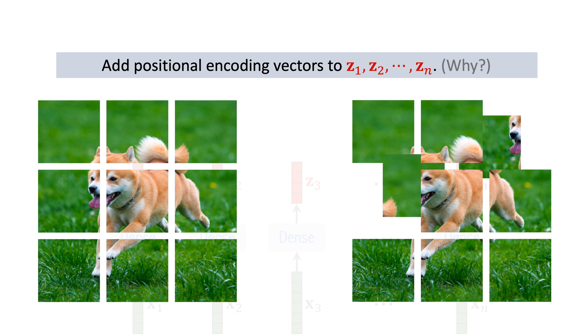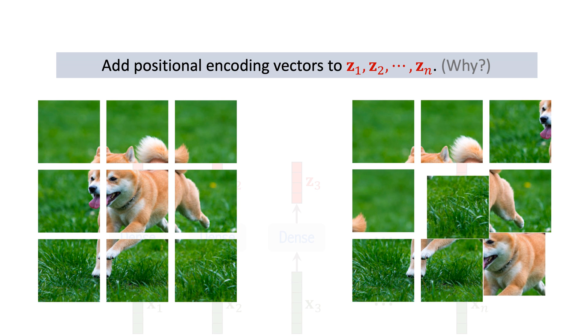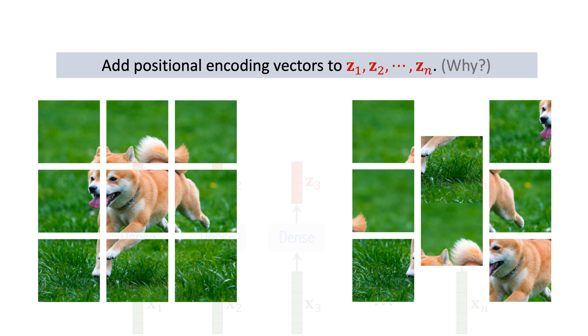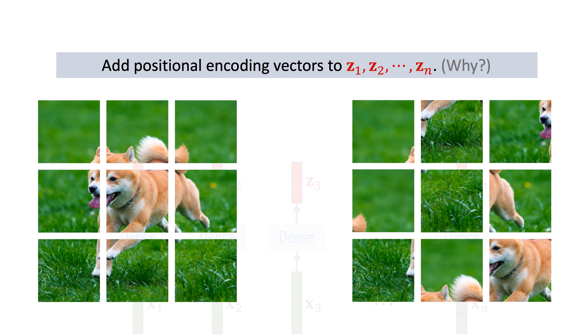Look at the image on the right. We exchanged the positions of some patches. Now the two images are different. However, swapping the z vectors will not affect the final output of transformer.